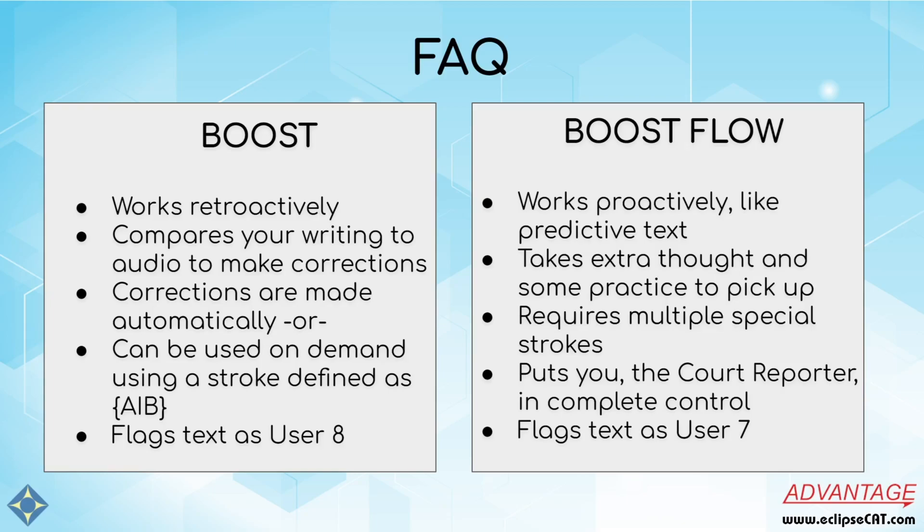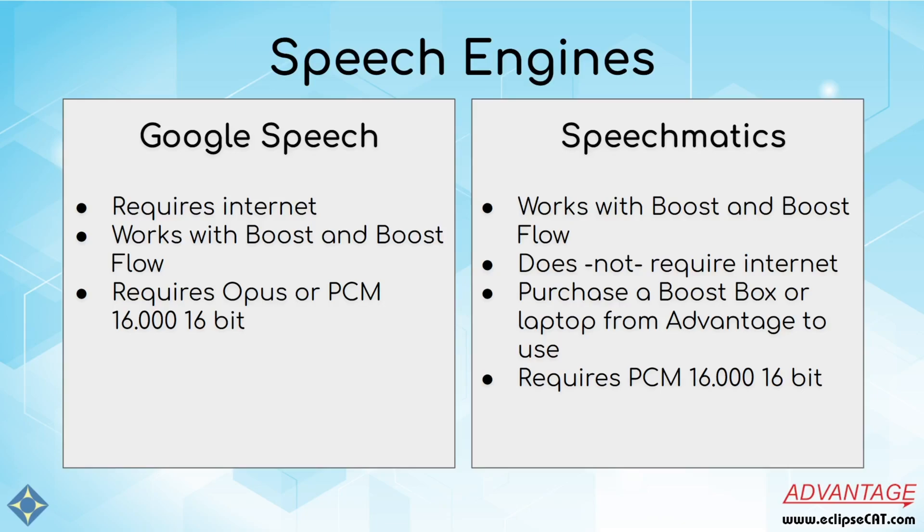There are strokes to accept text and strokes to reject text. When you're working with Boost Flow, you always have the option to just write or utter normally, and that's what will take over if you don't use any of the predictive text — it'll simply be ignored and stored. Boost Flow text, when you accept it, is flagged as user text 7. This way you can quickly see, as you're editing your document, which words you've accepted from Boost Flow and which words you've written on your steno machine or uttered with your voice mask.